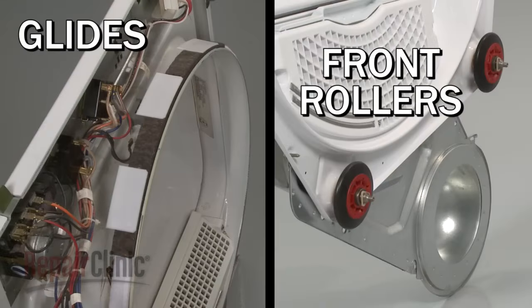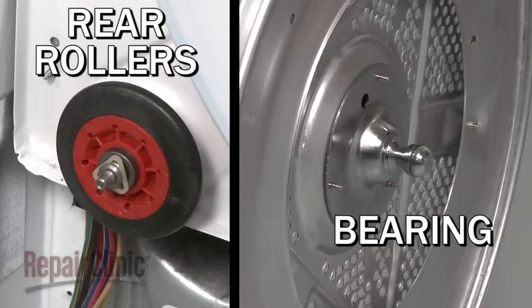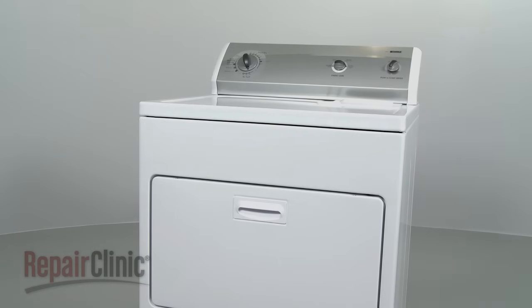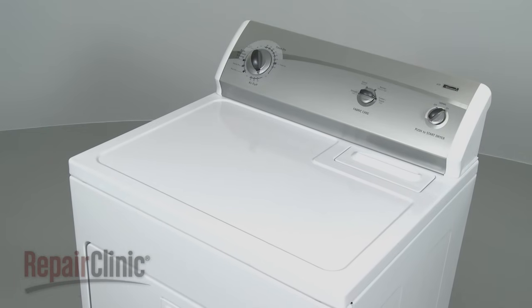The drum is supported by glides or rollers in the front and rollers or a bearing in the rear, depending on the model. Over time, the drum supports will wear out and the dryer may become noisy during use.